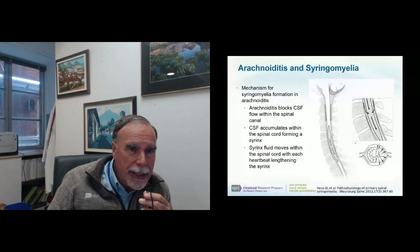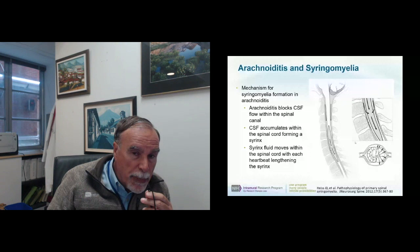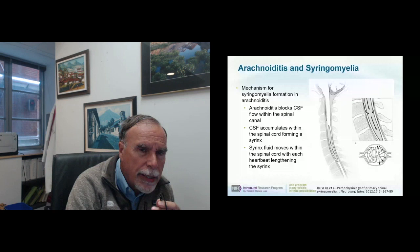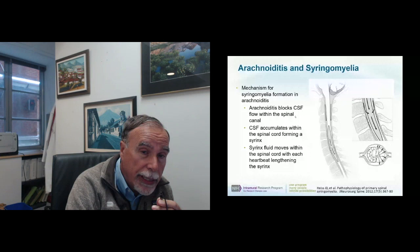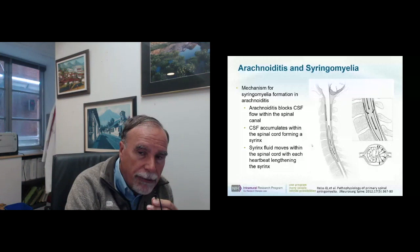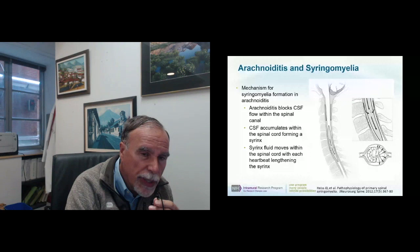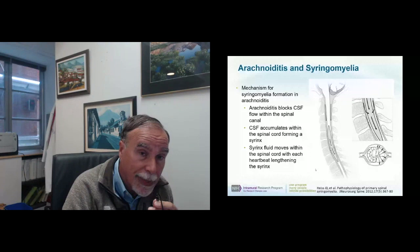We did a study at the NIH and proposed a reasonable mechanism for the development of syringomyelia with arachnoiditis. What people don't argue about is that CSF block relates to arachnoiditis and in turn to syrinx formation — if you have a block you can develop a syrinx, and if you relieve the block the syrinx usually goes away. Once CSF accumulates within the spinal cord, cine MRI and ultrasound studies show that the fluid moves within the cord with each heartbeat, which lengthens the syrinx.